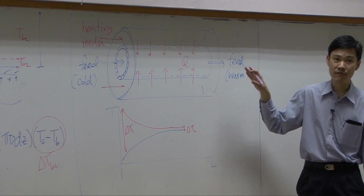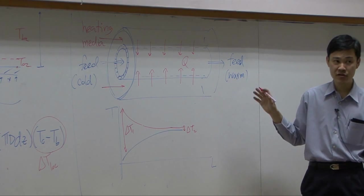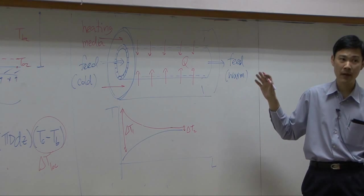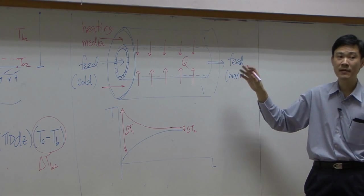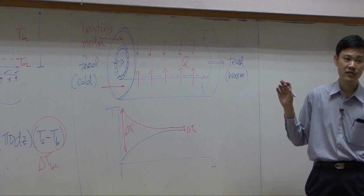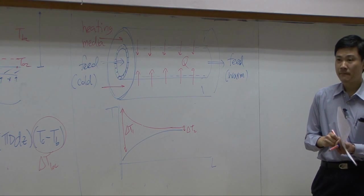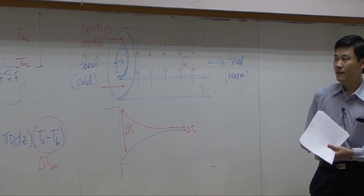This setup here is called double pipe heat exchanger because it has two pipes. This is the simplest one that you are going to learn in unit operation three.